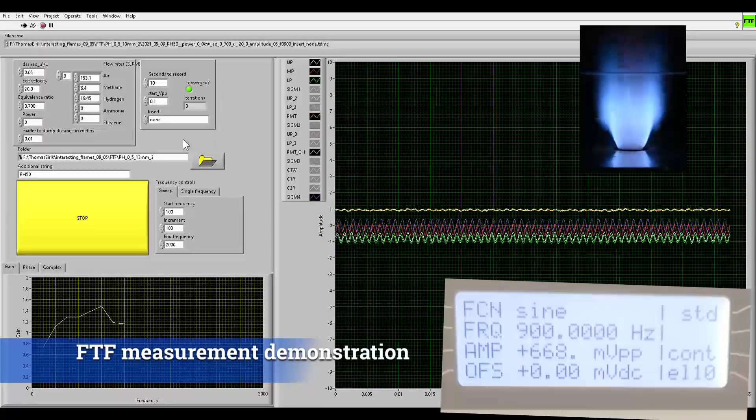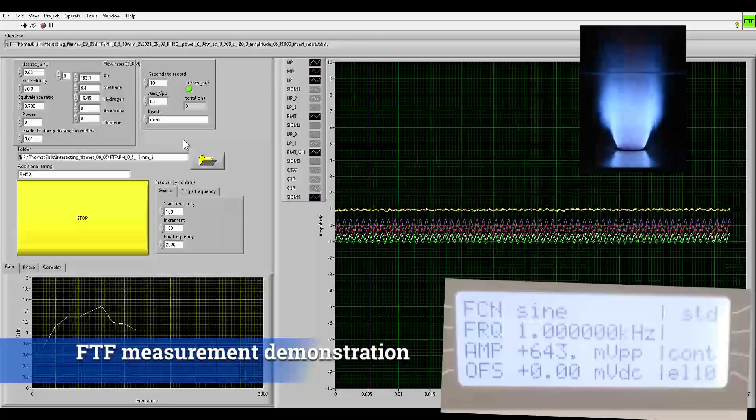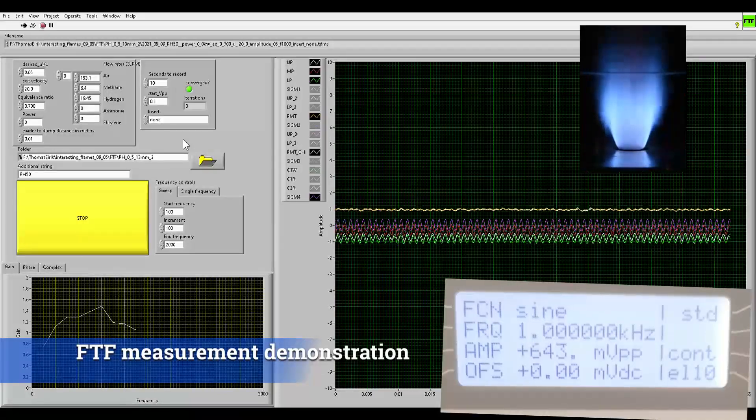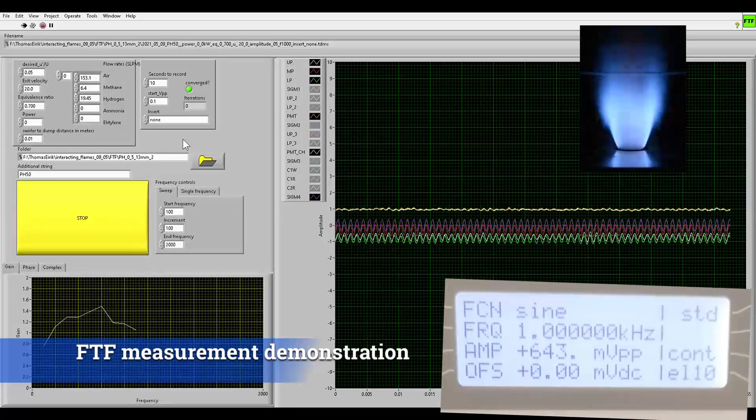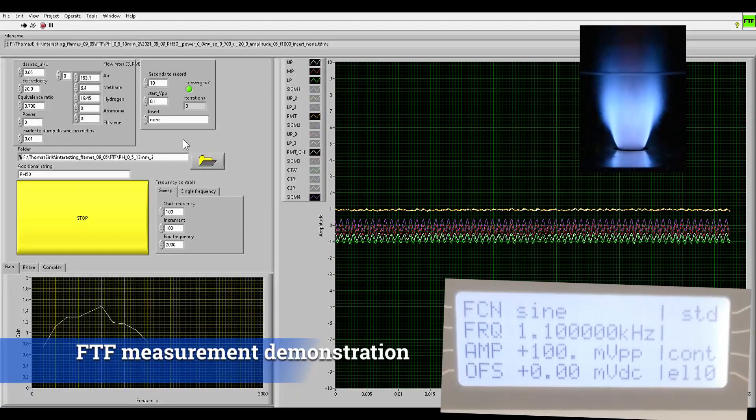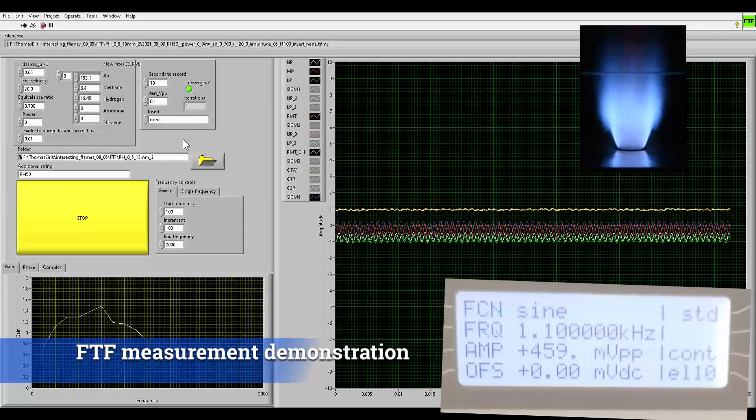In the plot on the bottom left, you can see that the lowest frequency we've used is 100 Hz, and that we increase in steps of 100 Hz. We finish at 2000 Hz. A smaller frequency step than this should be used if you want to capture all the features of the FDF. It's also important to recognise that the necessary frequency range and resolution will depend on the flame geometry and the flow field. Shorter flames and higher mean flow velocities have higher cutoff frequencies.